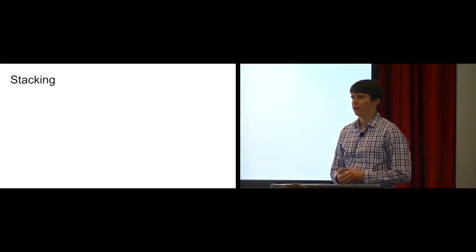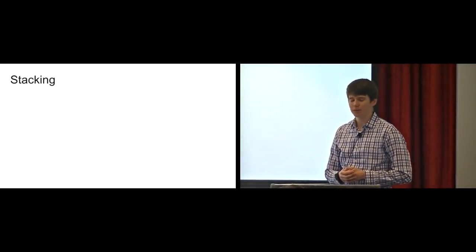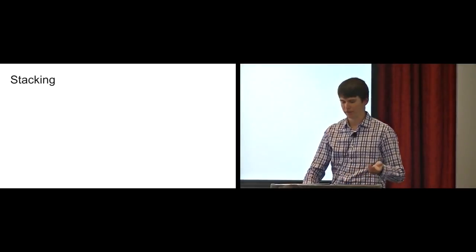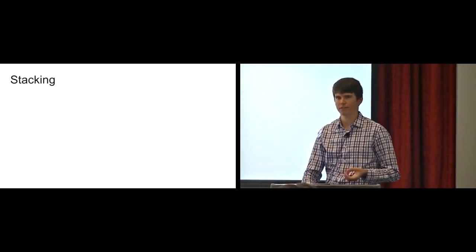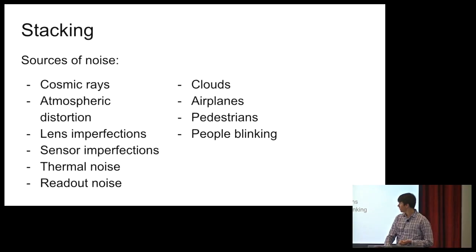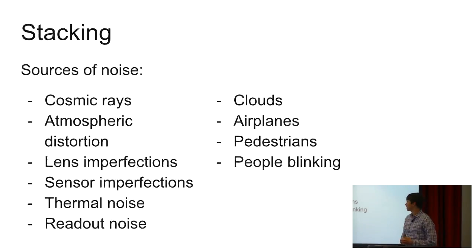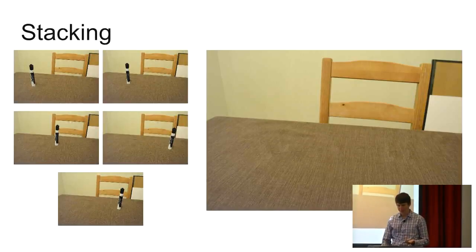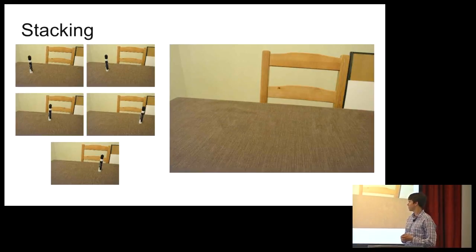That brings us to the other reason you might want to register some images: stacking. Instead of increasing your field of view, this is going to increase the fidelity of your image. When you take any given image, if it's for astronomy, you can have a lot of sources of noise. Much of this is inescapable. And then even if you're photographing stuff around your backyard, maybe someone walked in front of the thing you were taking a picture of, a family portrait, someone blinks. What can you do about that?